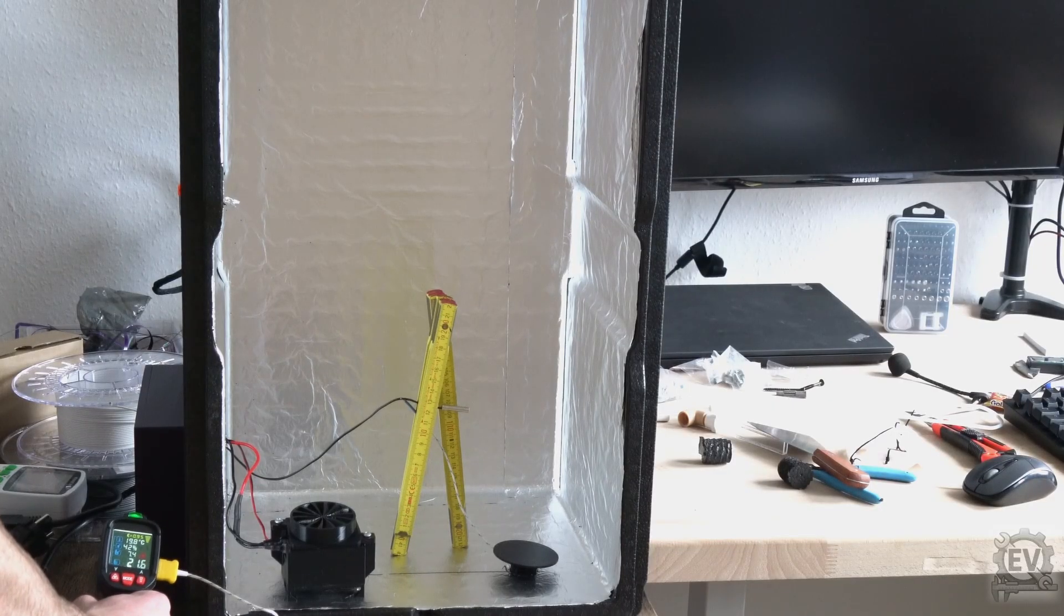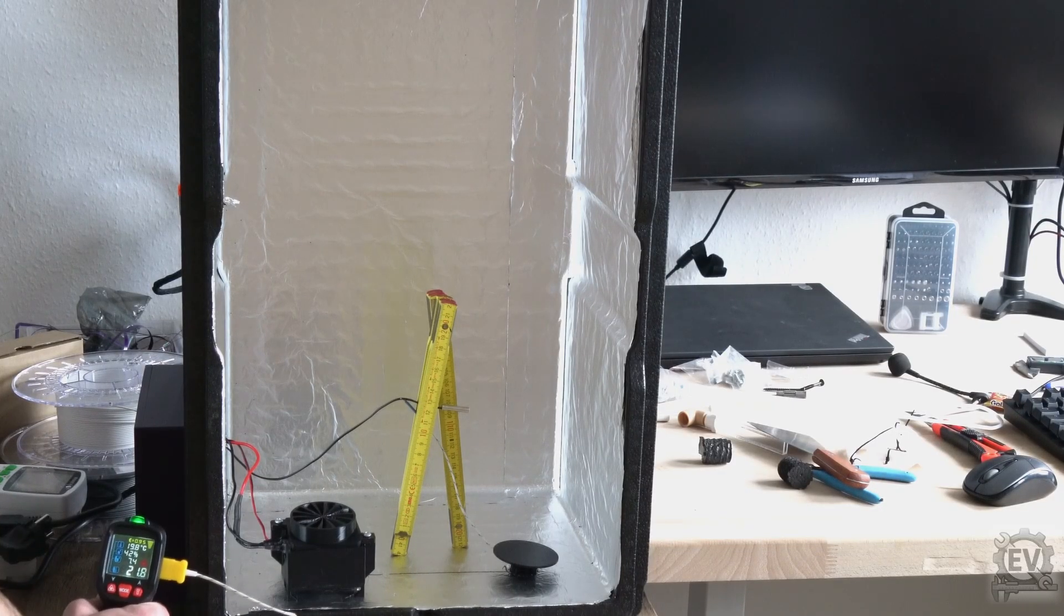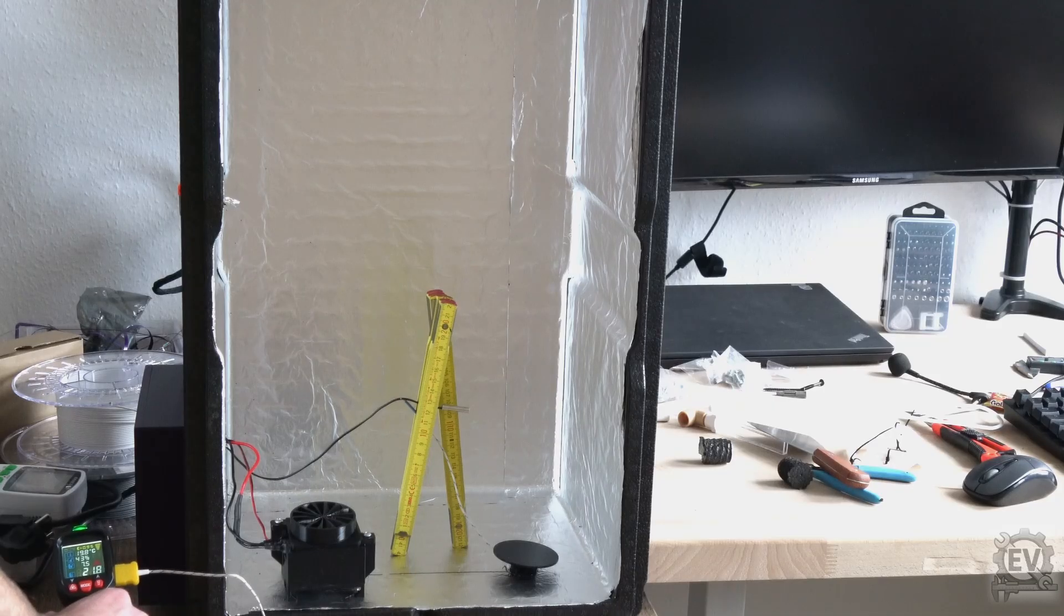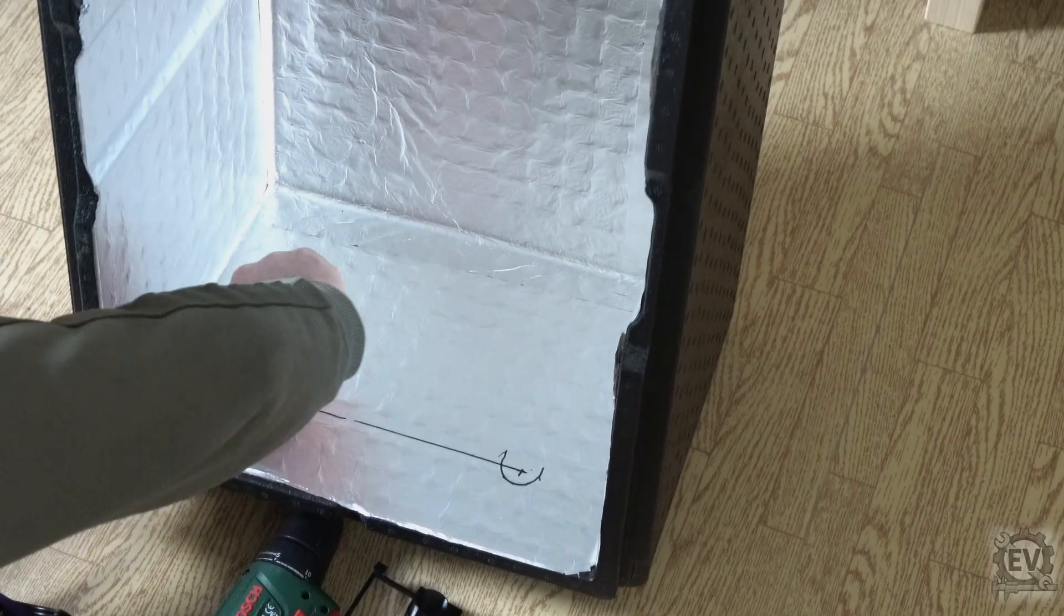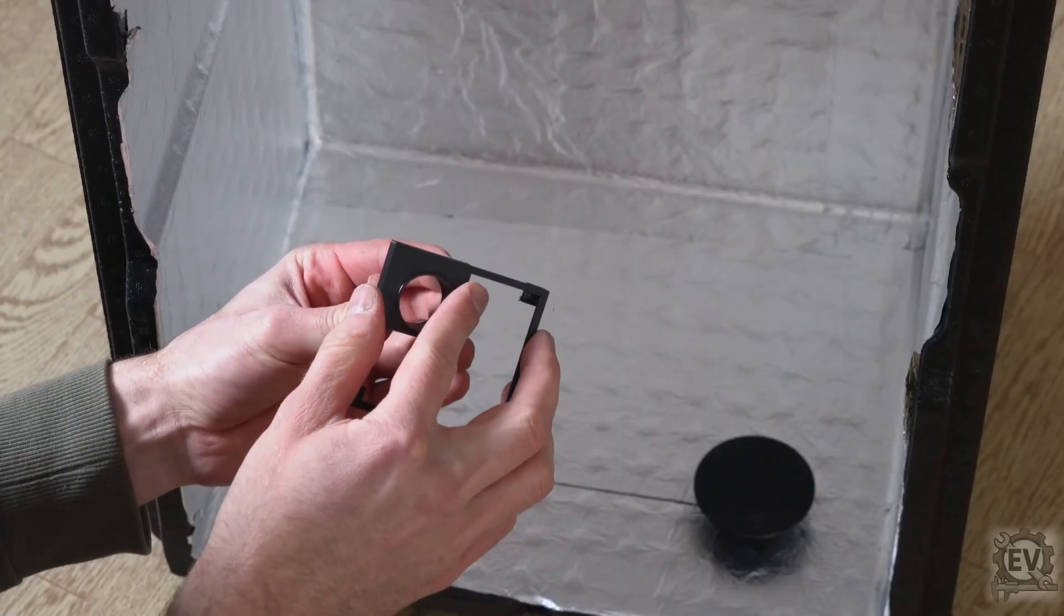The insulation box does a good job of preventing heat conduction but not heat radiation, which is why another aluminium duct was installed here. The electronics and the milled parts were then installed.